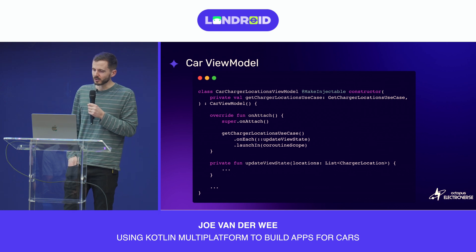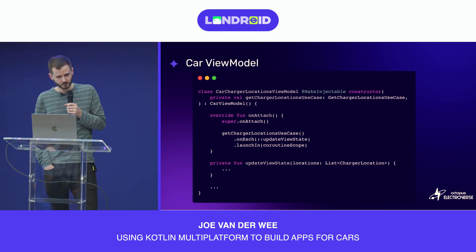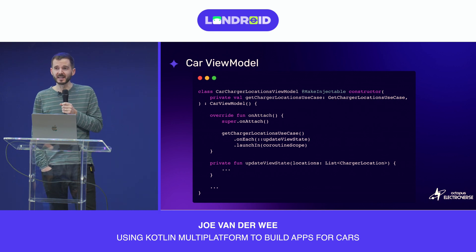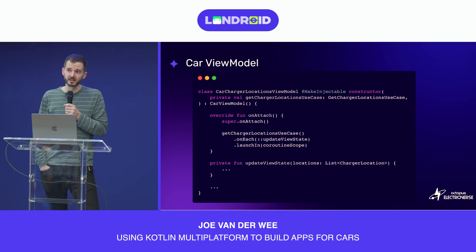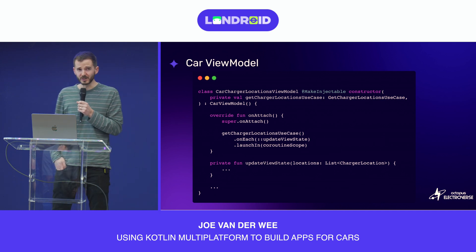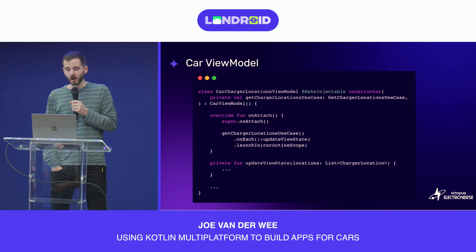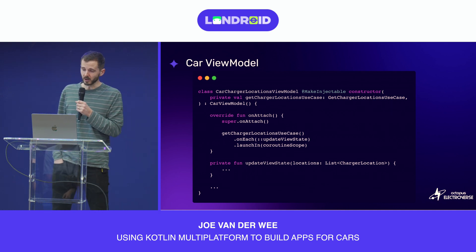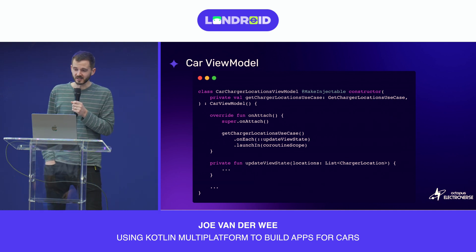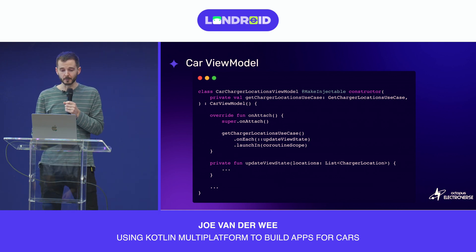The view model lives in the shared car module and essentially maps a flow of data from a use case in the shared module to something the car UI can display. We keep this view model layer quite thin, with all business logic, networking, persistence, etc. handled in the shared layer, which is shared across both car and mobile.